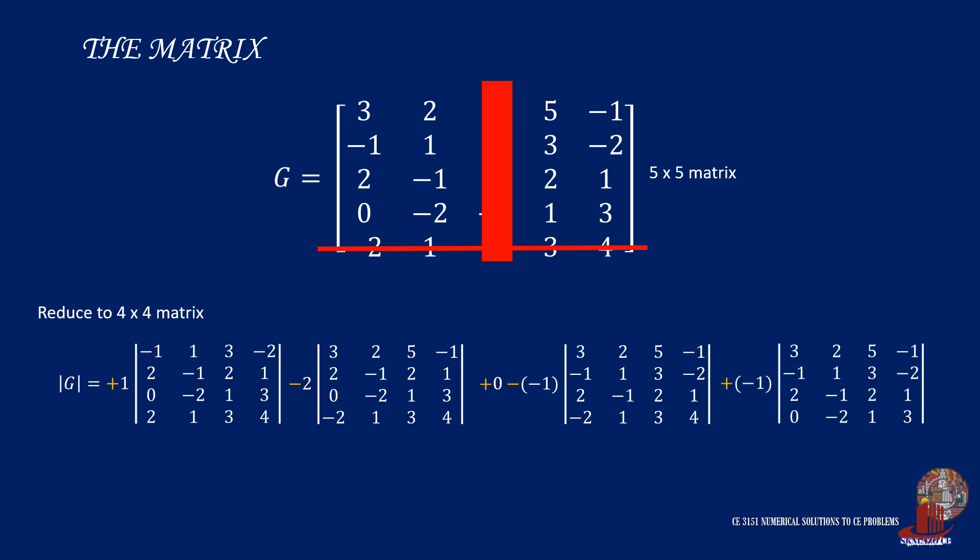So now we have four matrices in reduced 4 by 4 order. Although the matrix is already reduced, fourth order still can't be solved using shortcut methods. So we needed to reduce the matrices once more to reach order 3.